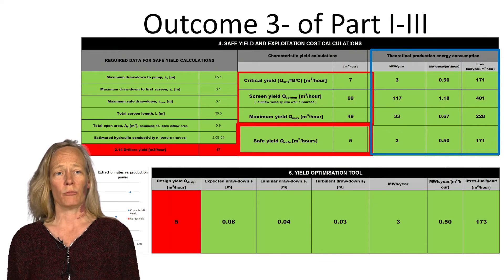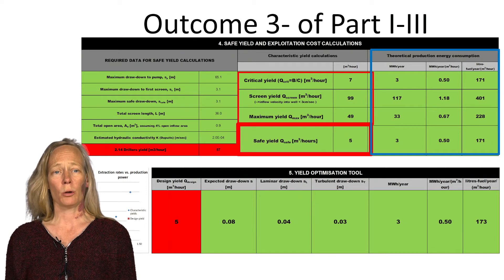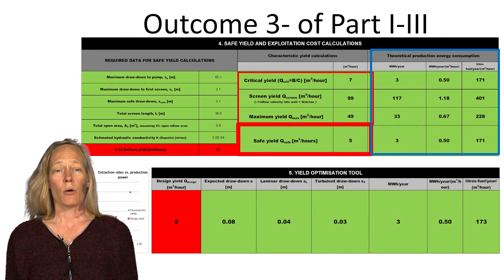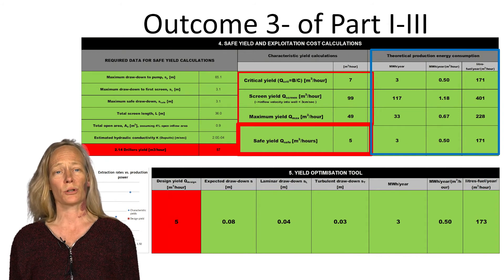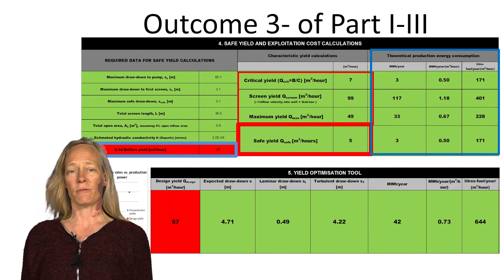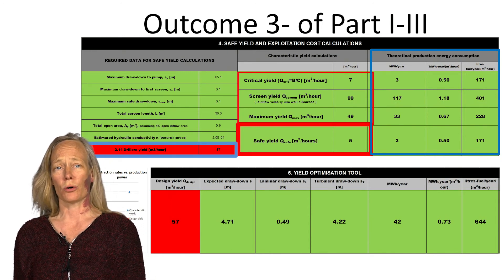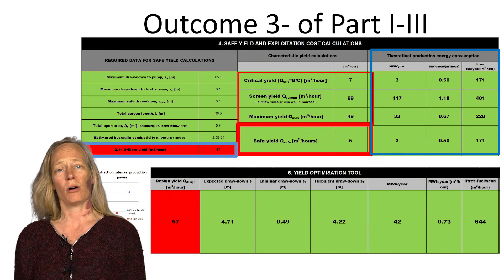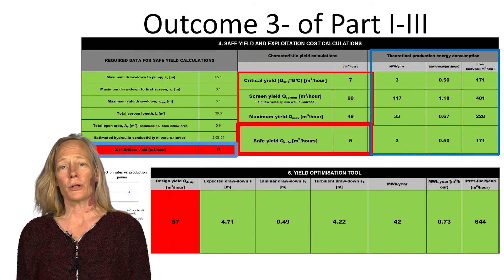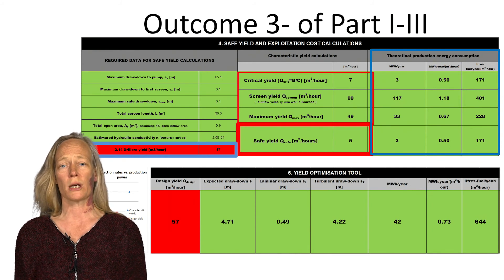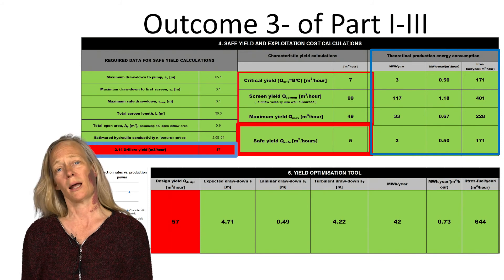With the design yield entered, the second column gives the expected associated drawdown — in this case very low, only 8 centimeters — and the associated production costs. If we introduce the driller's yield of 56, the expected drawdown becomes 4.7 meters. The reason the driller's yield should never be used is the constraint of the maximum yield. The maximum yield of 49 should never be exceeded, as this would mean the pump or the screen runs dry, leading to excessive clogging and aging of the well.